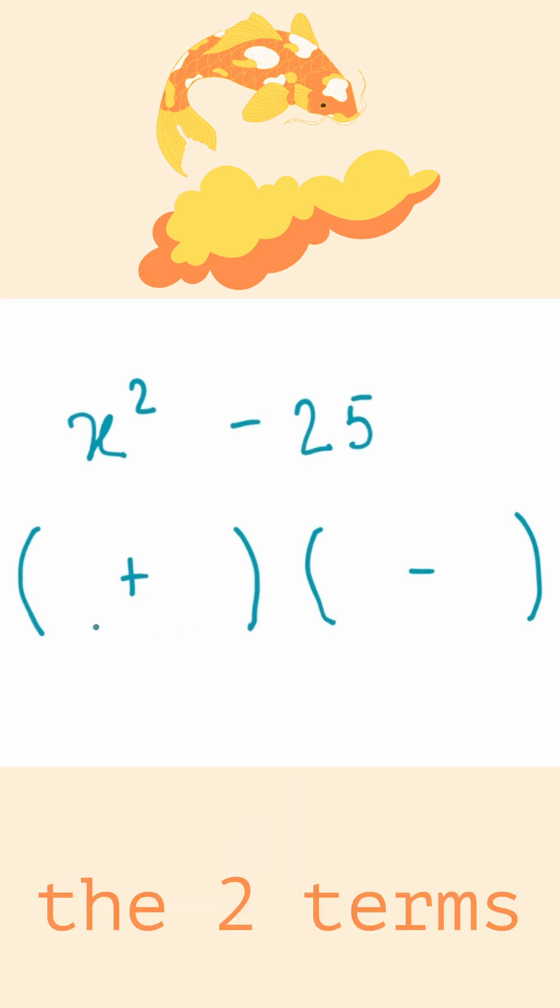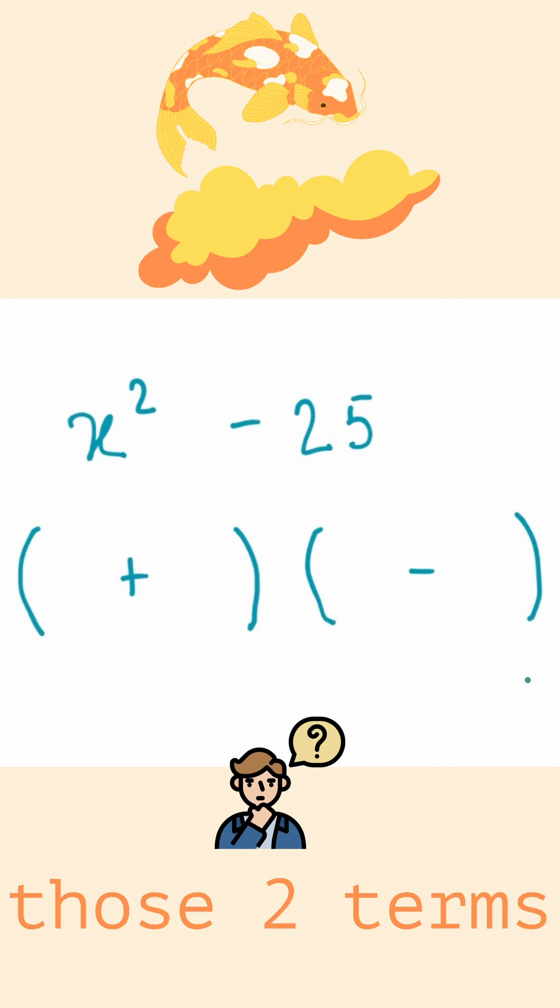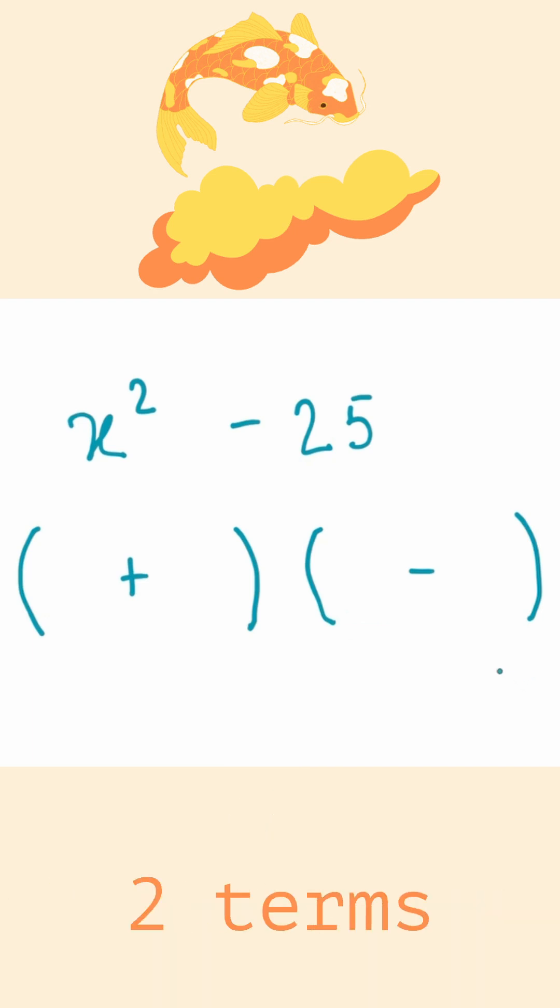The second step is the two terms that will be in here will be the exact same as the two terms in here. Now what are those two terms? Those two terms are just the square root of your two terms in the question.